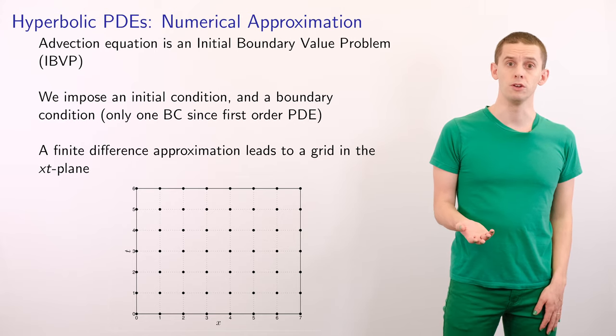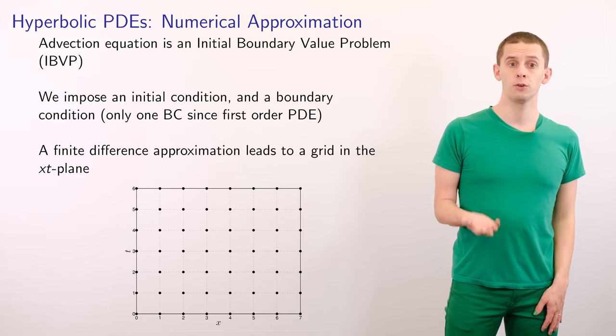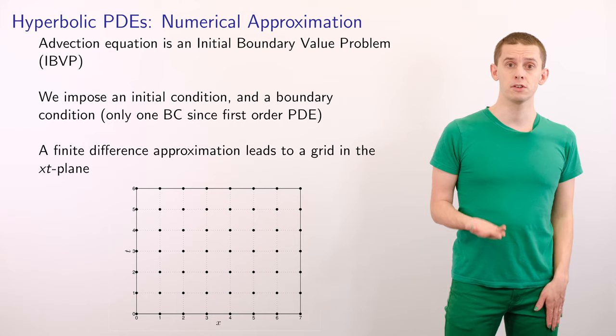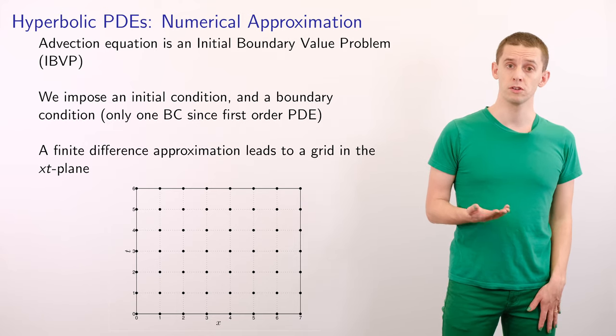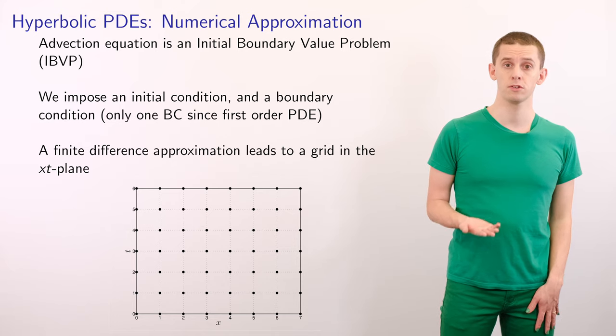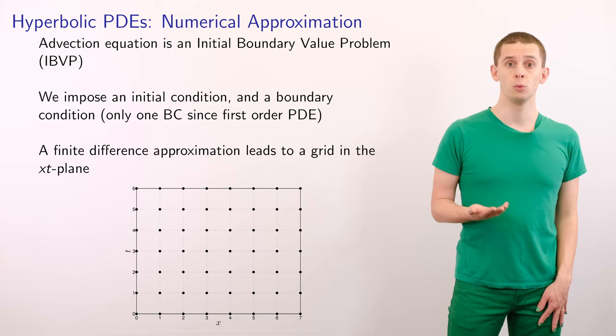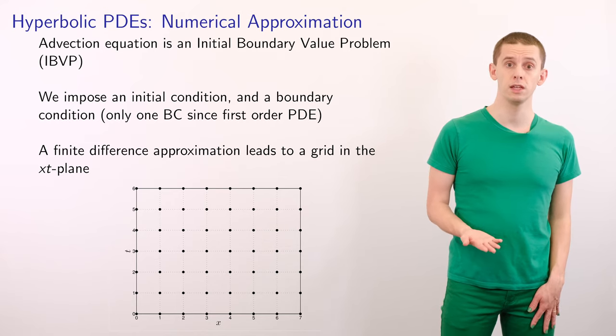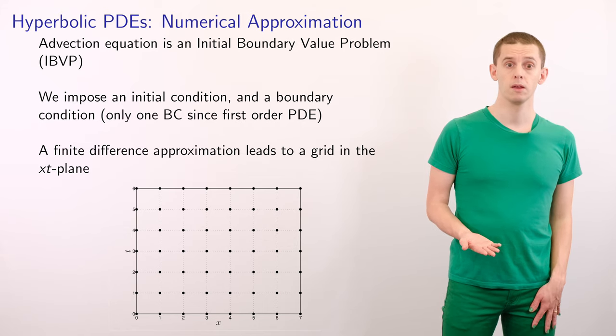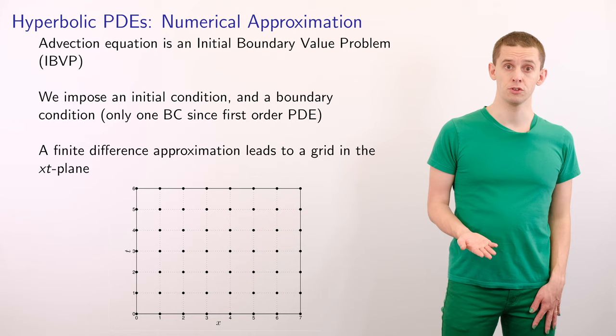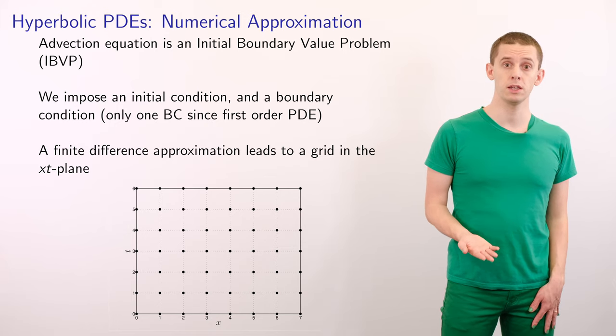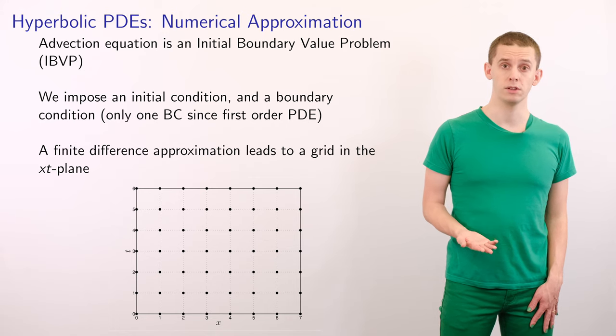The linear advection equation is an initial boundary value problem. We can impose an initial condition at time t equals zero, and also a boundary condition. And since this is a first order equation, we can impose a single boundary condition. And through our consideration of characteristics in the previous video, we can impose a boundary condition at one side of our domain depending on the sign of c and the direction of characteristics. And if we develop a finite difference approximation, that will lead to a grid in the xt plane. So we can have a grid, as shown, where we have a spacing delta t in the t direction, and a spacing delta x in the x direction.